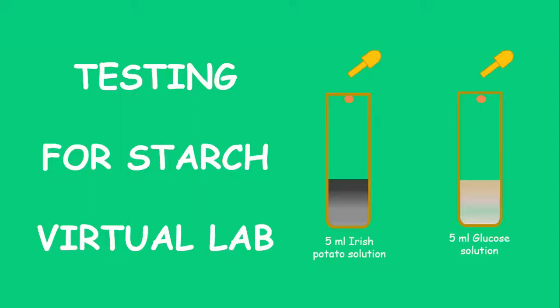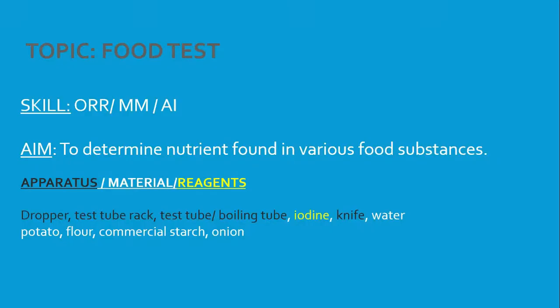Testing for starch — virtual lab, food tests. Skills that can be tested include ORR and MMAI. Teachers are only allowed to test two skills per experiment. The aim is to determine the nutrient found in various food substances.